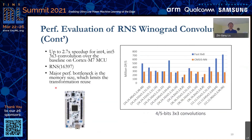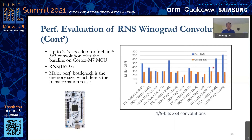This shows the performance result on the ARM Cortex-M MCU processor. The benchmark uses 4-bit and 5-bit activations with 3-by-3 kernels. Again, the orange color is the baseline. Our faster convolution, shown in blue, outperforms the baseline when the channel number is greater than 16 or 32, with a maximum of 2.7 times faster. On this MCU, the major performance bottleneck is memory size, which limits transformation reuse.